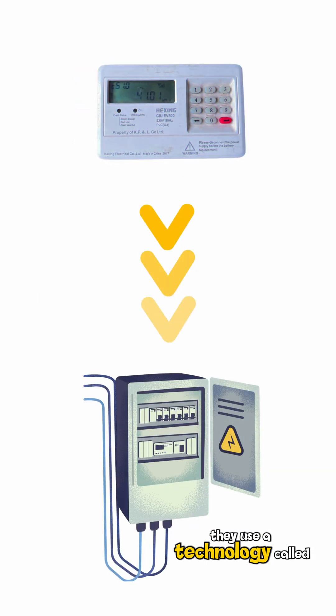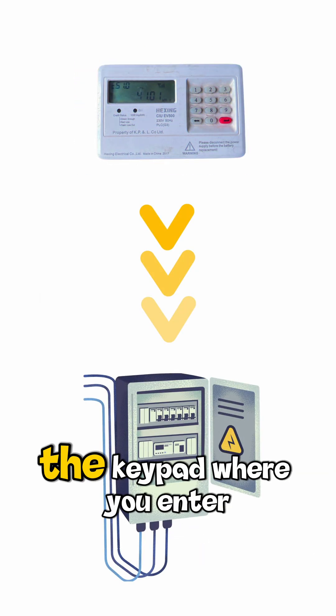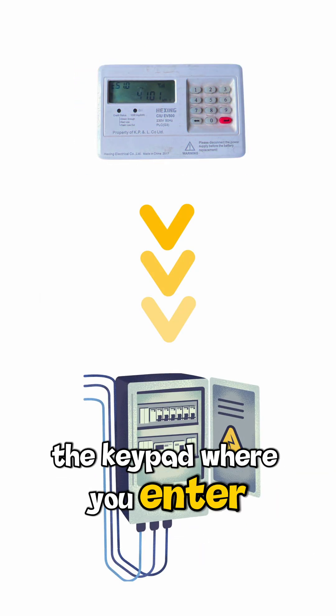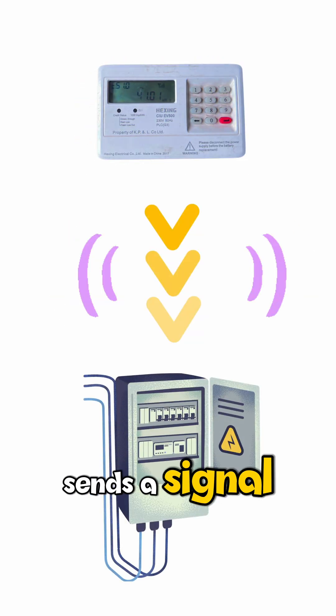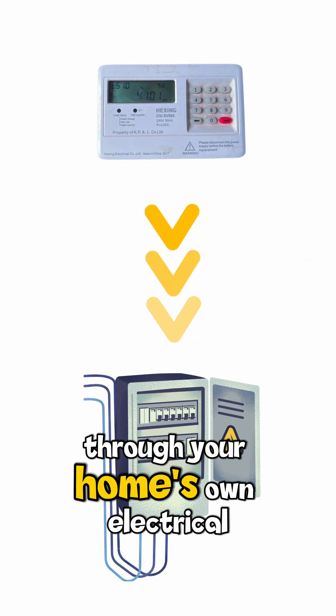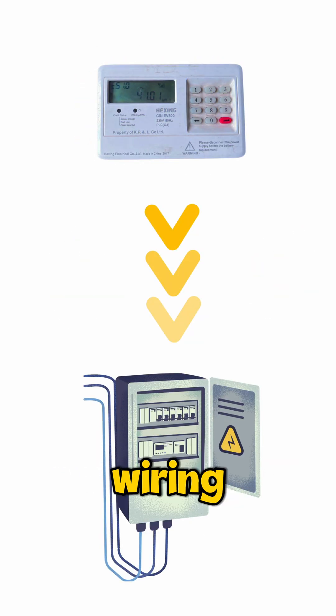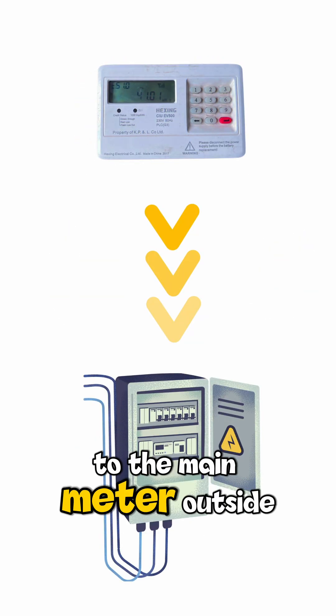So how do these two parts talk to each other? They use a technology called Powerline Communication. The keypad, where you enter your 20-digit token, sends a signal through your home's own electrical wiring to the main meter outside.